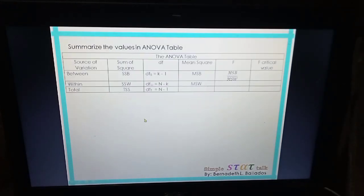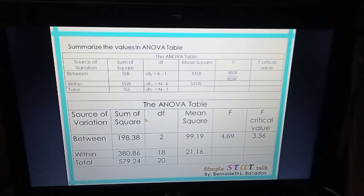Next, we can now summarize our computed values following this format. Put the values in. Find SSB from what we computed earlier. If you add SSB and SSW, it should be equivalent to TSS that we computed earlier. If you add DFB and DFW, it should result in N minus 1, which is 20. The critical value was obtained earlier from the table.